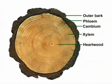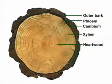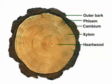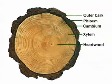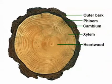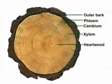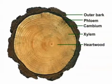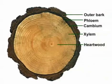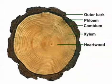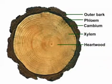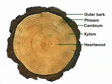Structure of woody stem. Woody stem consists of outer bark, inner bark, cambium, and xylem which consists of sapwood, heartwood, and pith.